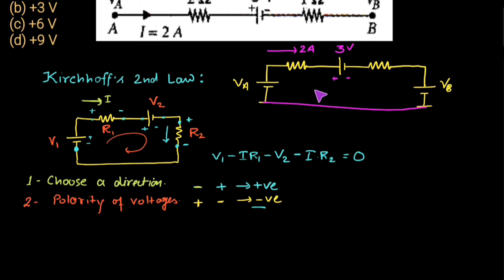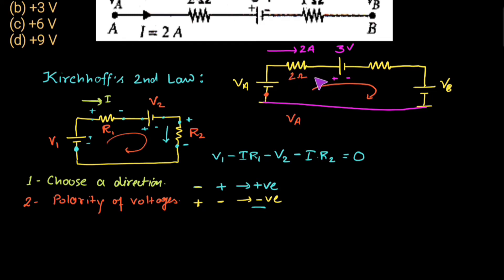We choose a clockwise direction. Starting from this point and moving clockwise, we see the negative plate first, then the positive plate for V_A — we are moving from lower to higher potential, so V_A is taken as positive. Moving across the 2 ohm resistor, the current is entering from one side and leaving from the other, so we are moving from higher to lower potential. The voltage drop across the 2 ohm resistor is negative: minus 2 ohms × 2 amperes = minus 4 volts.